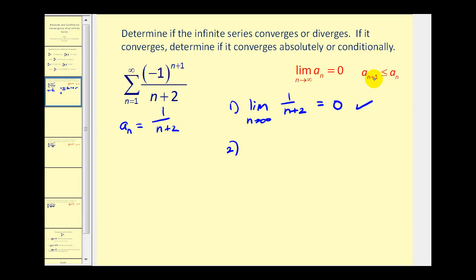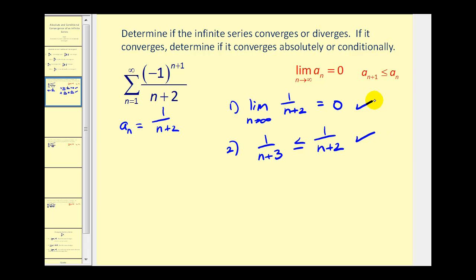To determine a sub n plus one, we'll replace n with n plus one, so we'd have one over n plus one plus two, which would be n plus three, less than or equal to a sub n, which is one over n plus two. These denominators will always be larger, and therefore this fraction will always be less than or equal to this fraction. So both conditions of the alternating series test have been met, and this given series is convergent.